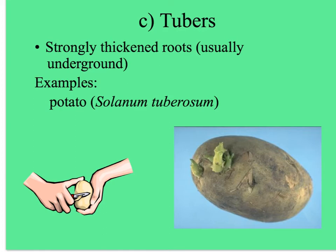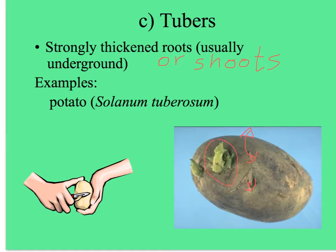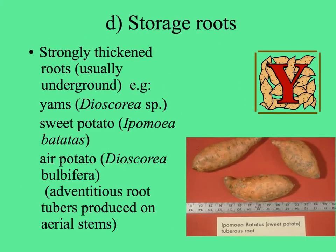Plants may have tubers, which are strongly thickened roots or shoots that are usually underground and modified for storage. The potato is a kind of stem tuber, and the eyes of the potato are actually the little axillary buds with the potential to grow a new shoot — you can cut up a potato and plant these eyes to get a whole new crop. There are also storage roots like sweet potatoes and yams. The air potato, an invasive pest plant, makes tubers above the ground that spread this plant easily into natural areas.